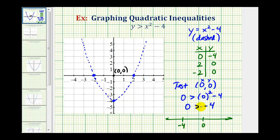So if this is true, we shade the same region our test point is in, which means our solution will be the region inside our parabola. If we pick any point in this region, the coordinates of the point would satisfy the inequality y is greater than x squared minus four. We'll take a look at a second example in the next video. I hope you found this helpful.